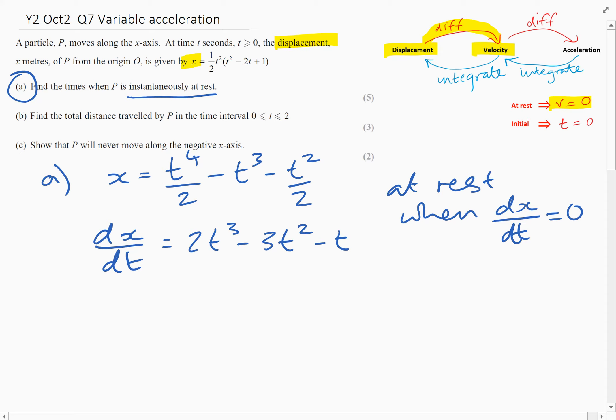So if we put that equal to zero and solve it, we could just take a T out there. So it's T times 2T squared minus 3T minus 1. And then if we factorize that, we will get 2T minus 1, T minus 1.